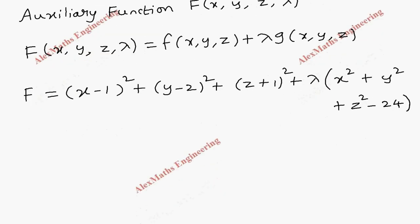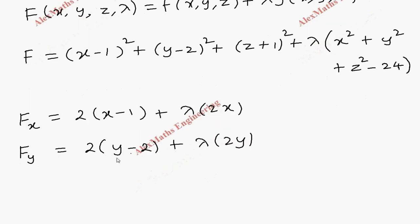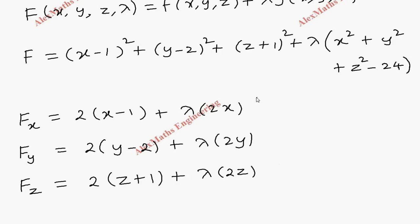Now we find the partial derivatives. With respect to x: ∂F/∂x = 2(x−1) + λ·2x. With respect to y: ∂F/∂y = 2(y−2) + λ·2y. With respect to z: ∂F/∂z = 2(z+1) + λ·2z.